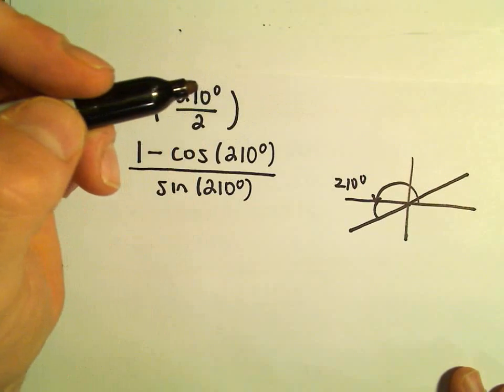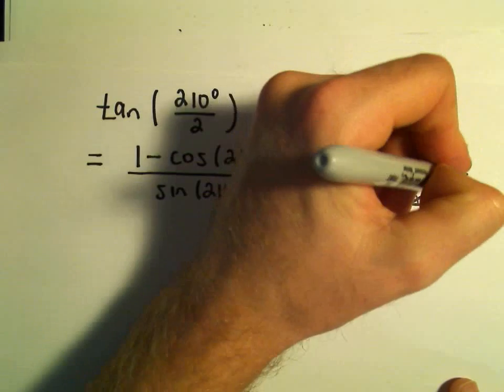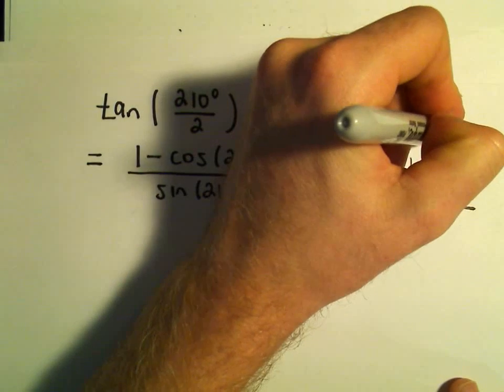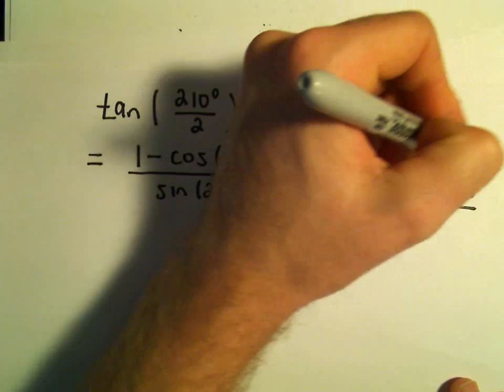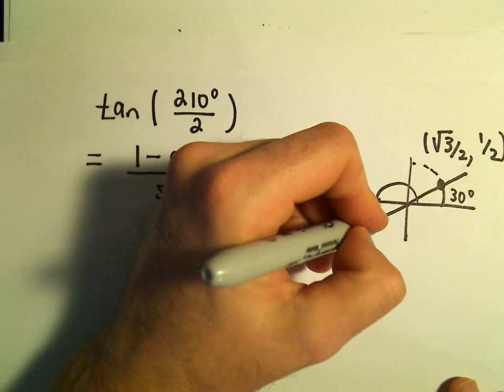Let's see, if we think about the angle 30 degrees in the first quadrant. In the first quadrant, we get root 3 over 2 for the x-coordinate on the unit circle, and we get 1 half for the y-coordinate.